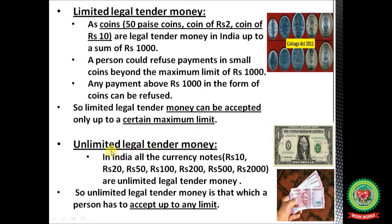Unlimited legal tender money includes all currency notes of different denominations in India — rupees 10, 20, 50, 100, 200, 500, and 2000 — which are all unlimited legal tender money. A person must accept these up to any limit. Suppose I have to make a payment worth rupees 1,00,000 — I can use denominations of rupees 2000, 500, or even 50. That person cannot deny such currency notes.